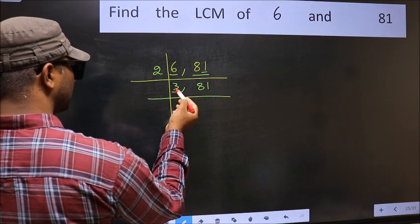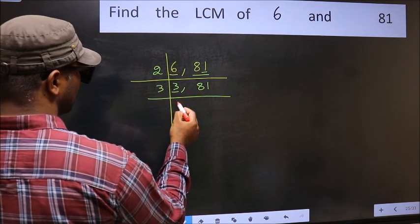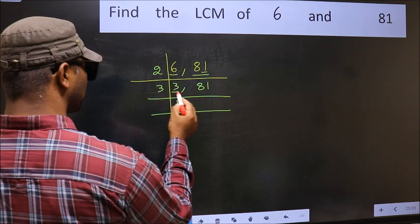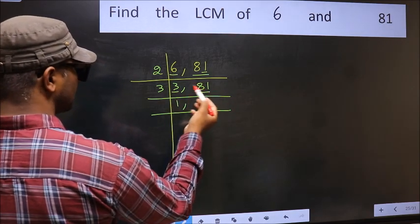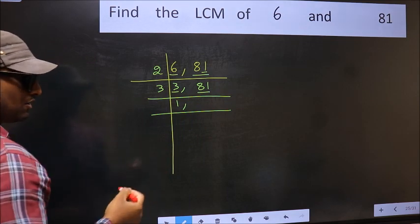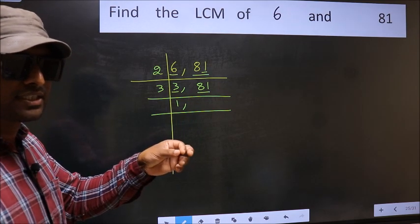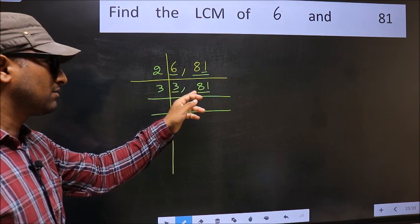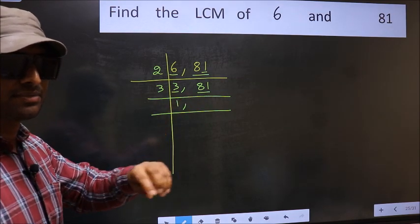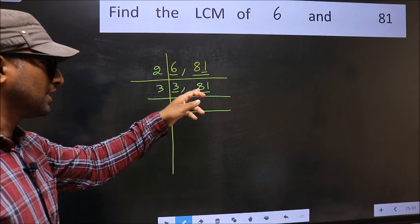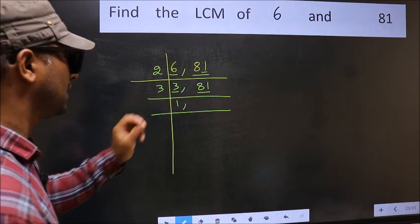Now we have 3. 3 is a prime number, so 3, 1 is 3. The other number is 81. To check whether 81 is divisible by 3, add the digits: 8 plus 1 equals 9. And 9 is divisible by 3, so this number is also divisible by 3.